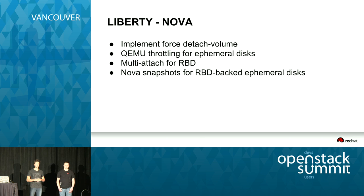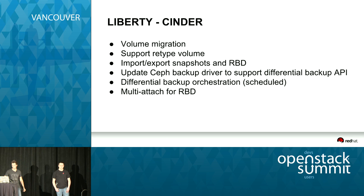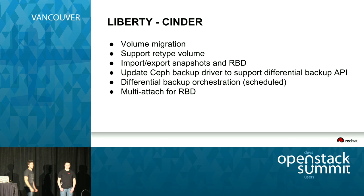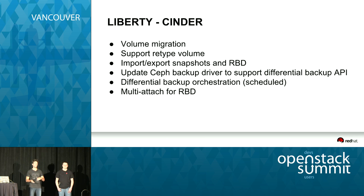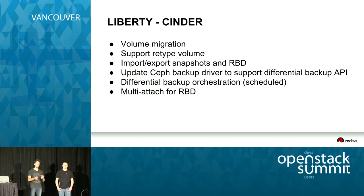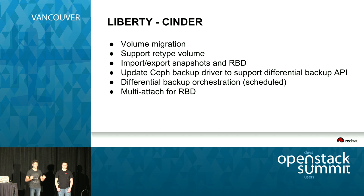We are planning on finishing the Nova snapshot at the RBD level instead of QEMU. For Cinder, we're going to support volume migration, working closely with retype support: you have a volume type, you change the type, and it goes to a different backend. We have several options: from a pool to a pool within a single Ceph cluster, from one Ceph cluster to another, or from Ceph to anything else like NetApp. We also want to be able to import and export snapshots or volumes for RBD.